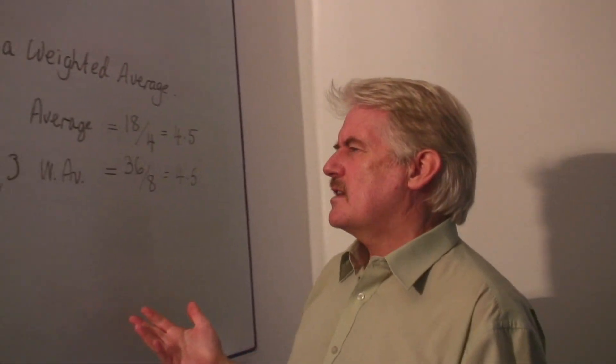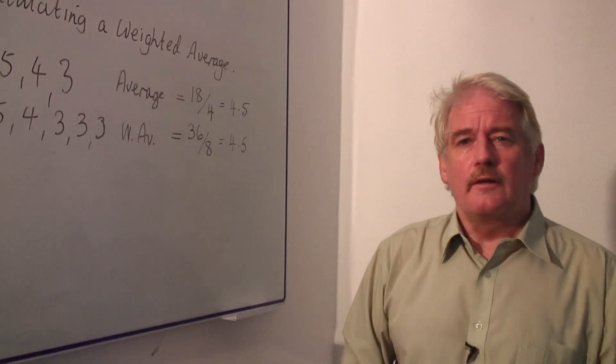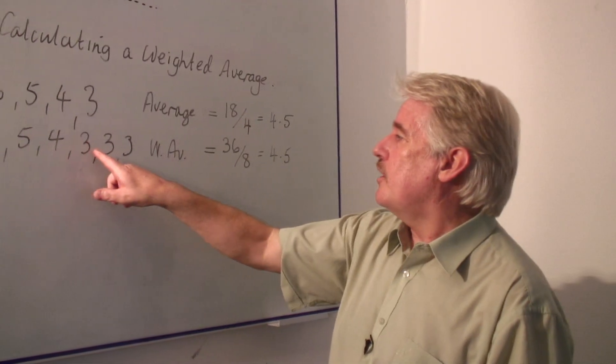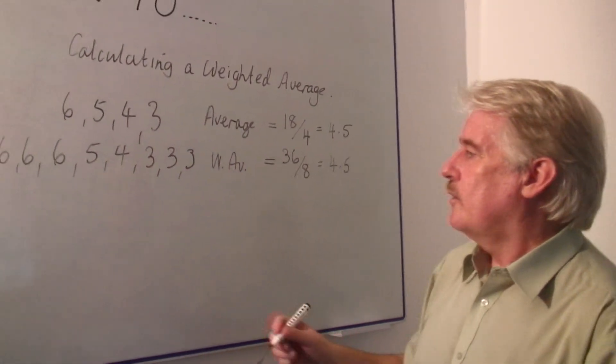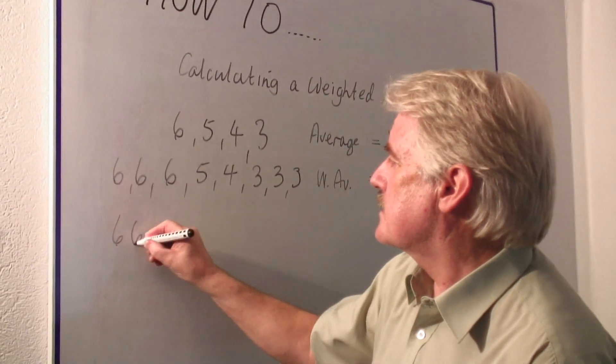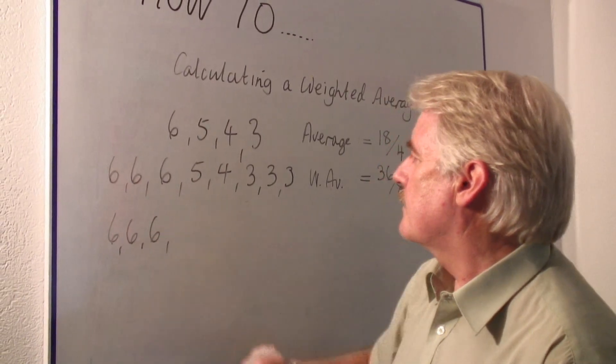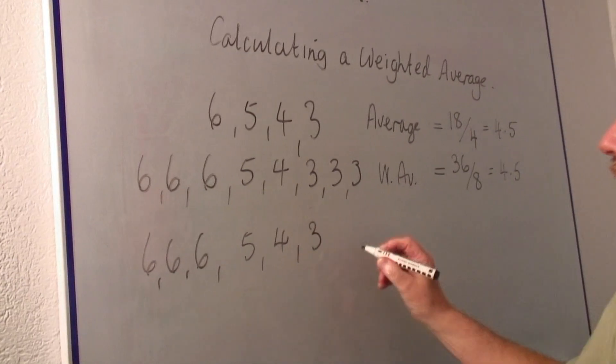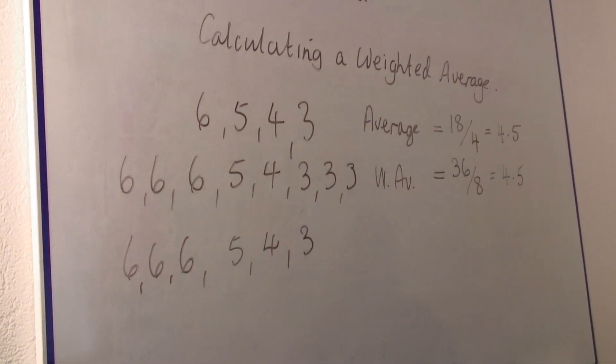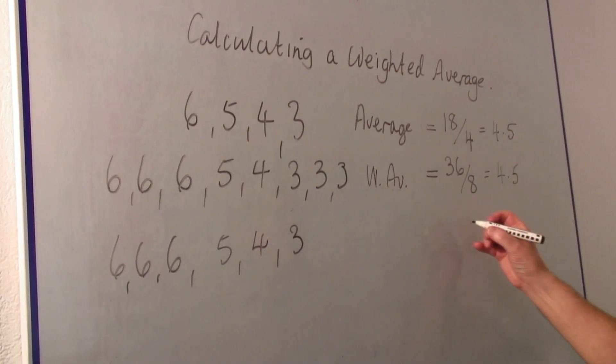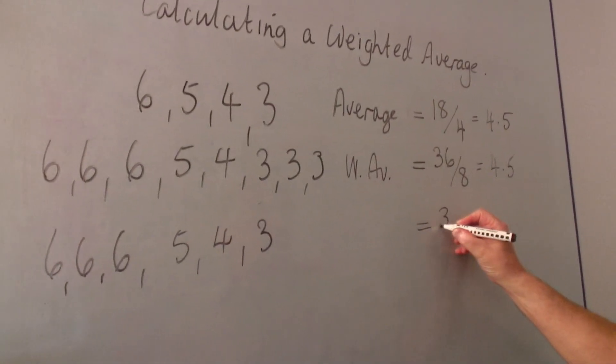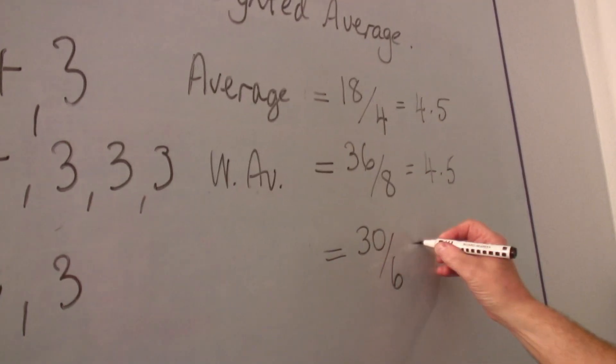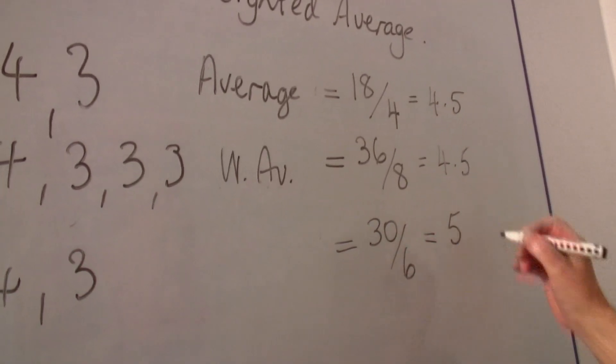Now you might say, well, what's the difference? The big difference would be if instead of the number three being there, we had six, six and six, and then five and four and three without the extra threes. We would then have thirty, this time divided by six, which gives us an average of five.